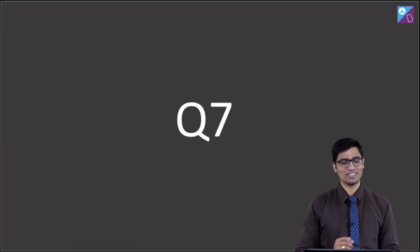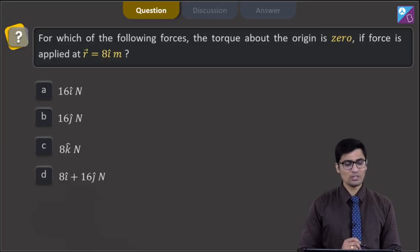This is question number 7. Question 7 says, which of the following forces, the torque about the origin is 0 if the force applied at r vector is equal to 8 i cap meters. The 4 options are 16 i cap Newton, 16 j cap Newton, 8 k cap Newton or 8 i cap plus 16 j cap Newton.